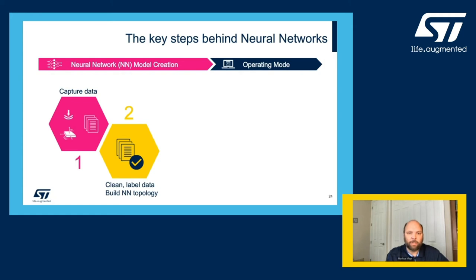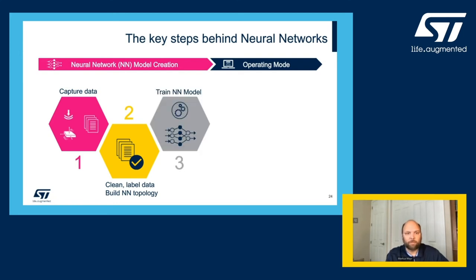Second, we need to clean and label the collected data and select and build the network topology using any of the available frameworks such as TensorFlow, Keras, ONNX, or others. As a first step, the neural network needs to be trained and optimized for the specific use case. These first three steps take a large portion of the development time and are usually handled by data scientists, machine learning specialists, and mathematicians.